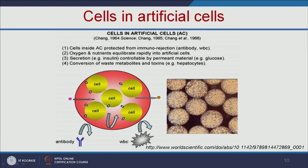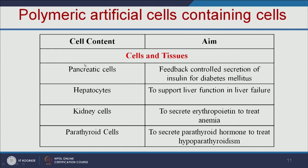Oxygen and nutrients can easily pass through this membrane. For example, if you are using pancreatic cells, they can secrete insulin depending on glucose level. If you encapsulate liver cells, they will convert waste metabolites and toxins. Other examples: encapsulated pancreatic cells secrete insulin for diabetes patients; hepatocytes support liver function in liver failure; kidney cells secrete erythropoietin to treat anemia; and parathyroid cells secrete parathyroid hormone to treat hypoparathyroidism.